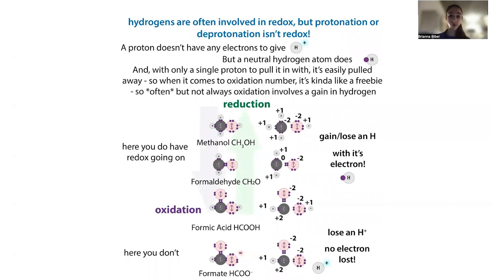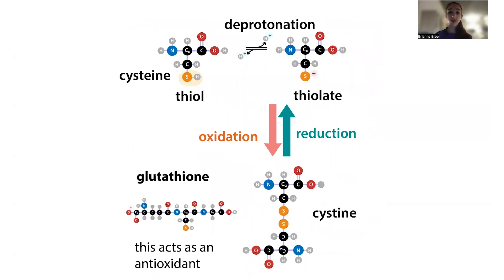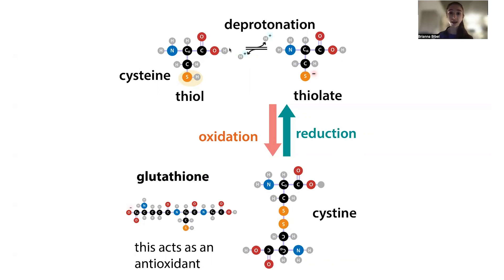We need to be careful about the gain of a bond to hydrogen versus a bond to a proton when talking about oxidation or reduction. When you just have a proton — an H+ — there's no electron involved. For redox, we need to have electrons involved. If you're just gaining the hydrogen's proton but not its electron, it's just a deprotonation reaction — there's no redox involved. The thiol and thiolate have the same oxidation state, so deprotonation is not a redox reaction. But when you form disulfide bridges or form a bond to oxygen, that is a redox reaction.